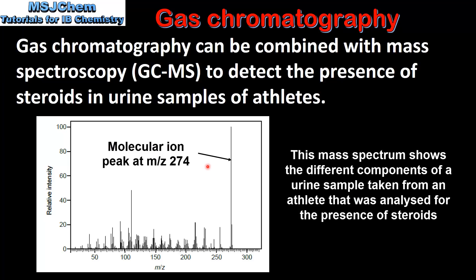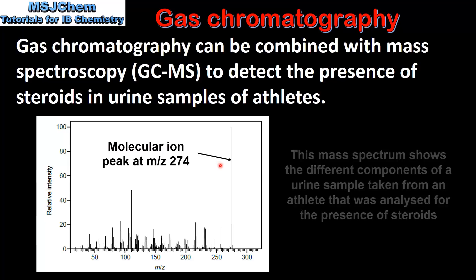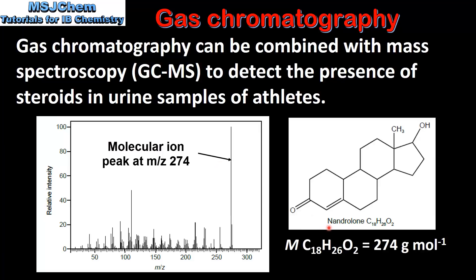From the mass spectrum we can identify the molecular ion peak with a mass to charge ratio of 274. This indicates the presence of nandrolone in the sample, which has a molar mass of 274 grams per mole. As we can see from its structure, it has a steroid backbone which is composed of 4 fused hydrocarbon rings. Esters of nandrolone are used by athletes as performance enhancing drugs.